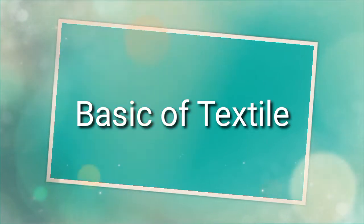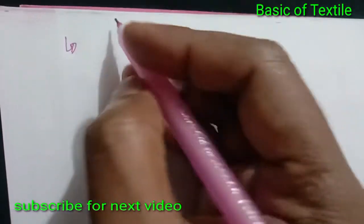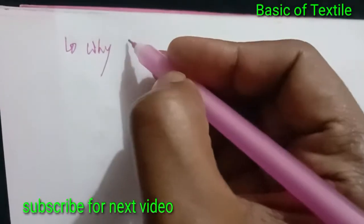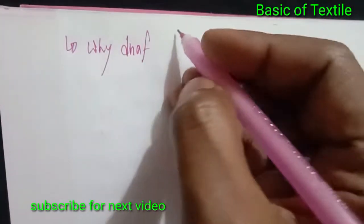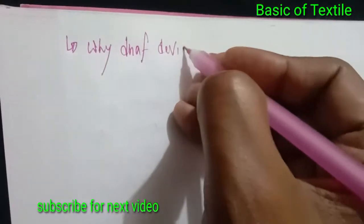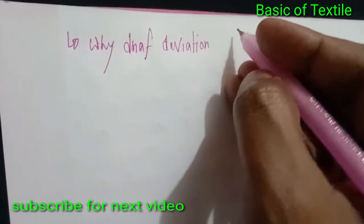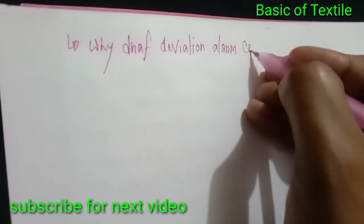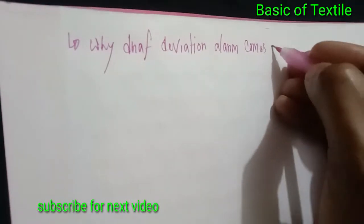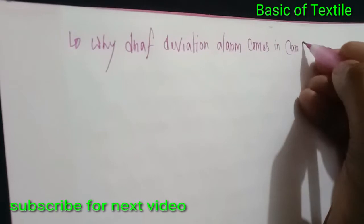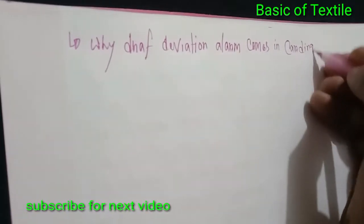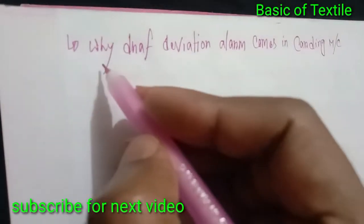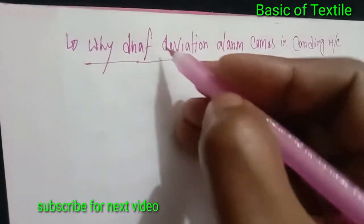Hello viewers, welcome to my channel Classic Optic Style. Today we discuss about why drop fire drop deviation alarm comes in the carding machine. Carding machine author — carding machine jet drop deviation alarm.